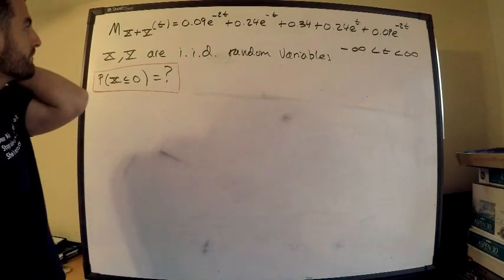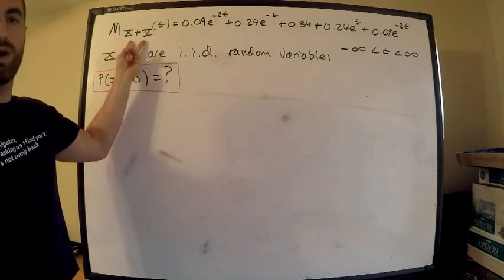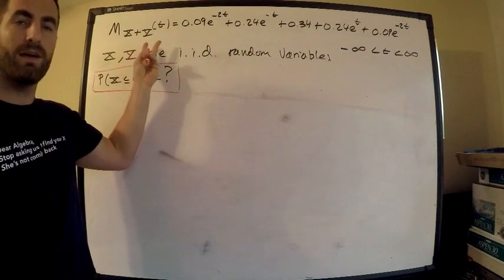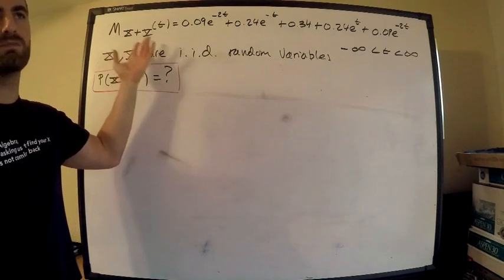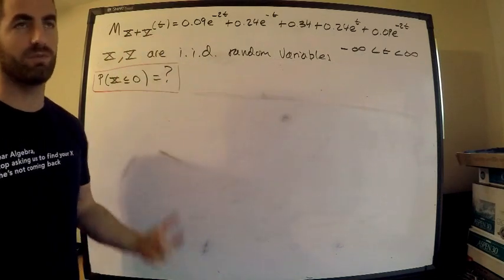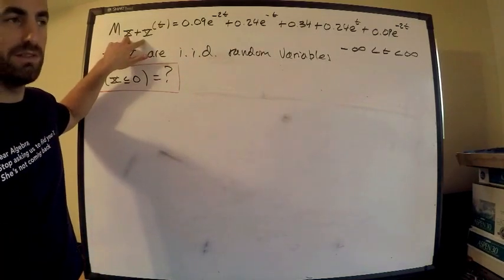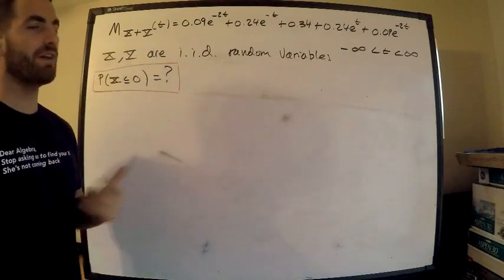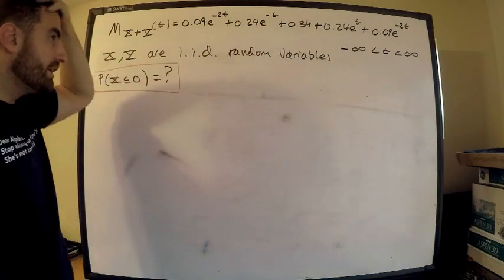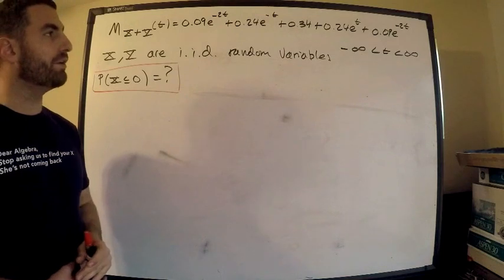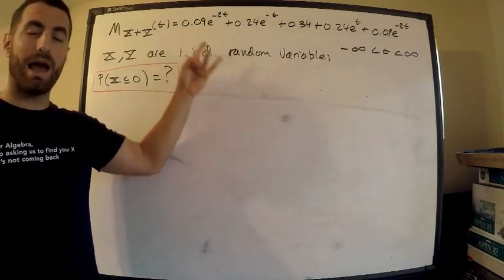This is the question. We are given the moment generating function for the sum X plus Y. They just write M of t, which is annoying — I've added the X+Y subscript to make it more explicit. This is the moment generating function for the sum X+Y, and it looks pretty ugly. You need to immediately recognize that X and Y have to be discrete.